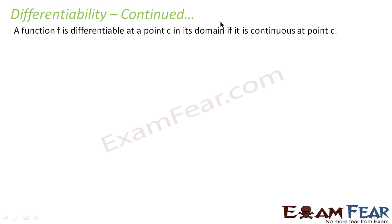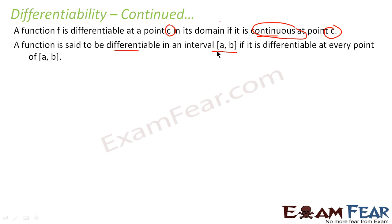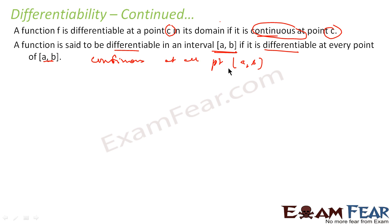A function is differentiable at a point c if it is continuous at point c. A function is differentiable at all the points in the interval (a, b) if it is continuous at all points in (a, b) — that is, if it is a continuous function. So if it is continuous at all the points then it is differentiable at all the points. The logic here is: differentiable implies continuous.